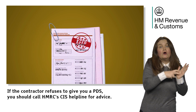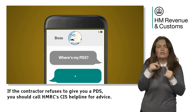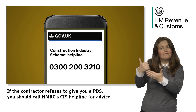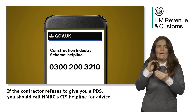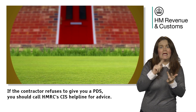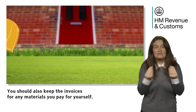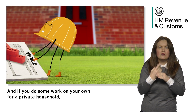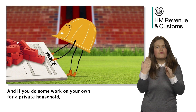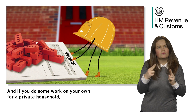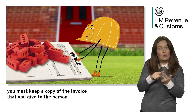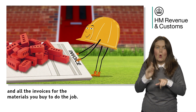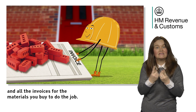If the contractor refuses to give you a PDS, you should call HMRC's CIS helpline for advice. You should also keep the invoices for any materials you pay for yourself. And if you do some work on your own for a private household, you must keep a copy of the invoice that you give to the person and all the invoices for the materials you buy to do the job.